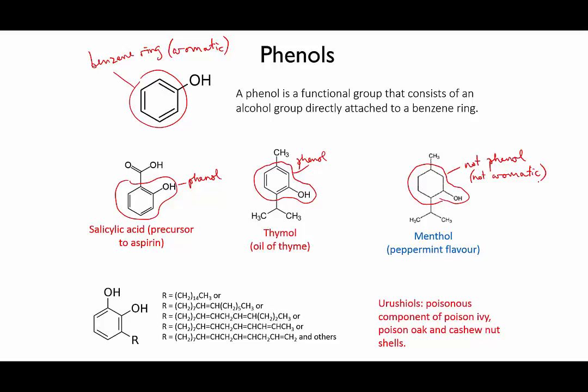Lastly, here's a class of molecules known as the urushiols. These are based on the phenol structure, with an extra OH group. The R group in this structure can be one of a number of different hydrocarbons, and I've listed some examples here. They tend to be long hydrocarbon chains. The first example is 14 CH2s in a row followed by a CH3, so that's a 15-carbon chain. The next is also a 15-carbon chain, but it has a double bond in the middle. And the others are all variations on this. This class of compounds are a powerful irritant and are found in a family of plants that include poison ivy, poison oak, and cashews. And this is why cashews are never sold in their shells — it's the shells that contain the urushiols.